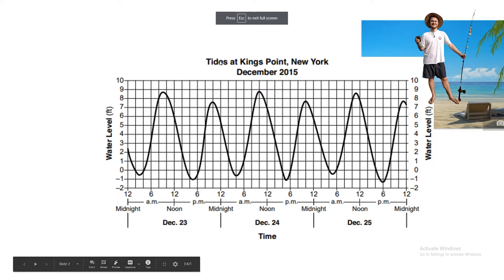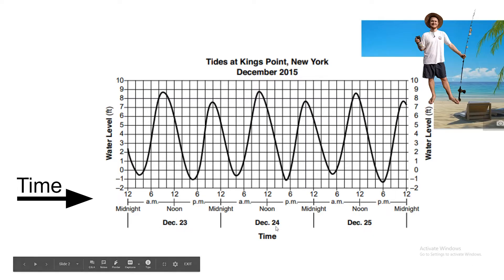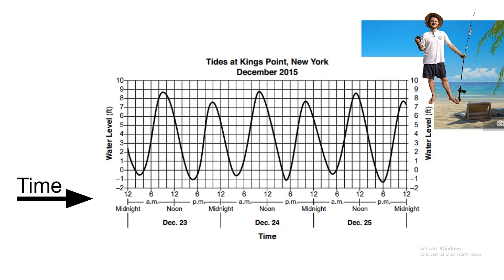So here's your chart. This is the tides at King's Point. This wavy line represents the water level. But before we get to that, at the bottom here you have time going from days — December 23rd, 24th, 25th. Time moves to the right. Each major interval is 12 to 6 — 12 to 6 AM, PM. In between, each solid line is two hours: six, seven, eight, nine, ten, eleven, twelve. Boom, that works.